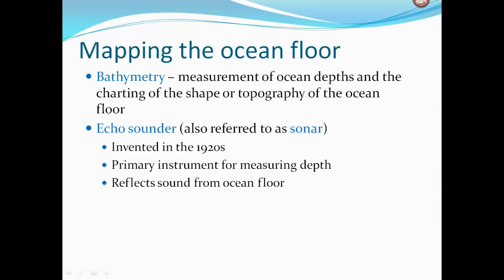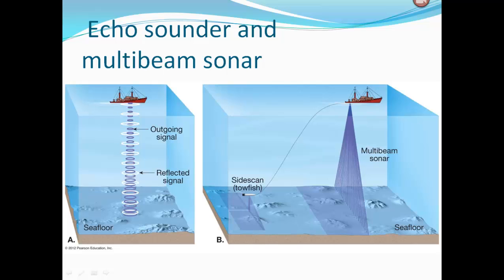Mapping the ocean floor — bathymetry. Bathymetry is the measurement of ocean depths and the charting of the shape or topography of the ocean floor. An echo sounder, also referred to as sonar, was invented in the 1920s and is the primary instrument for measuring depth. It reflects sound from the ocean floor — a pulse is sent down, hits the ground, reflects back, and they time how long it takes. Since we know the speed of sound, we can calculate the distance from the ship to the ocean floor.